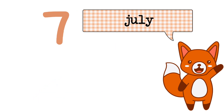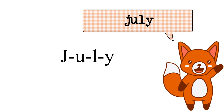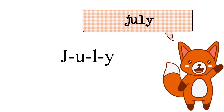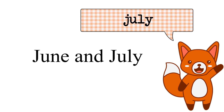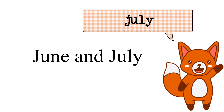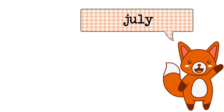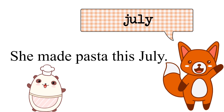July is the seventh month. J, U, L, Y. July. Hey, wait a minute. Don't June and July sound like siblings? Haha, I thought that too. She made pasta this July.